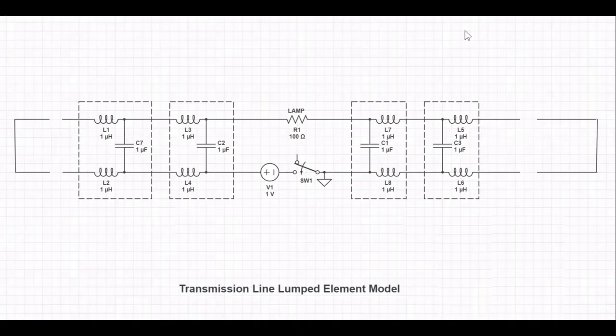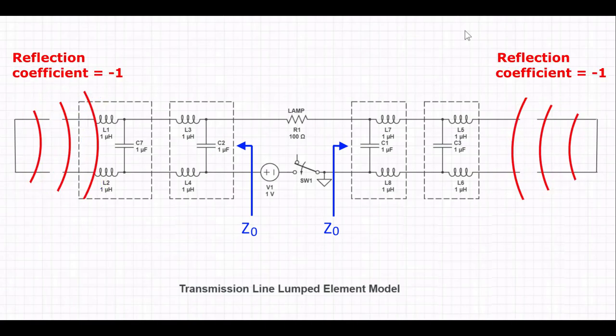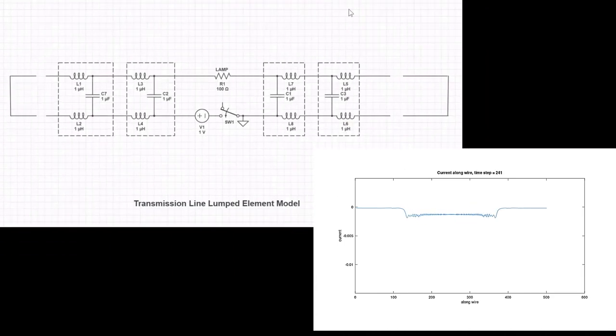Many YouTubers use the transmission line model to model the circuit, and the shunt capacitors provided the shortcut for the light bulb to turn on immediately. Capacitors in circuit theory allows instantaneous flow of current, and using it to validate Veritasium's point that energy is transferred by field propagation is of course using the wrong tool. They also saw the top and bottom wires forming transmission lines, and the voltage and current propagating between these two lines bounce back at the far ends acting like short circuits. This is totally different from the simulation.